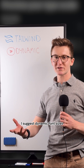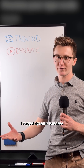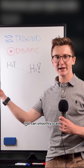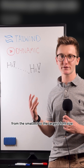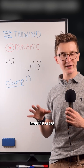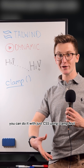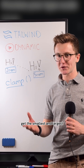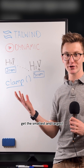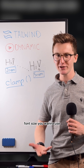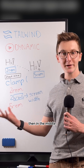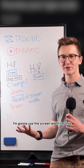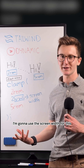To fix this, I suggest dynamic font sizes that can smoothly scale from the smallest to the largest font size. Believe it or not, you can do it with just CSS using clamp. First, get the smallest and largest font size you want to use. Then in the middle, put the value you want to use for scaling — I'm going to use the screen width for this.